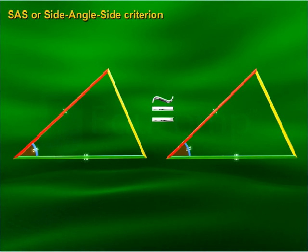SAS, or Side-Angle-Side criterion: If two sides and the included angle of one triangle are equal to the corresponding two sides and the corresponding angle of the other triangle, then the triangles are said to be congruent.